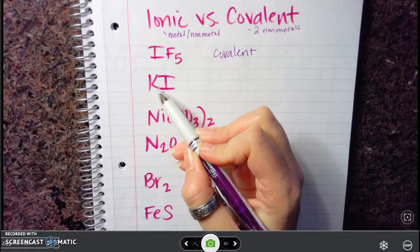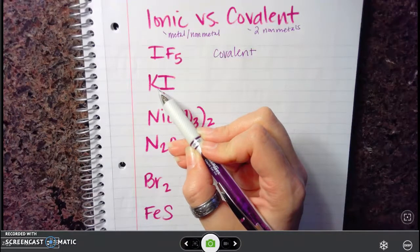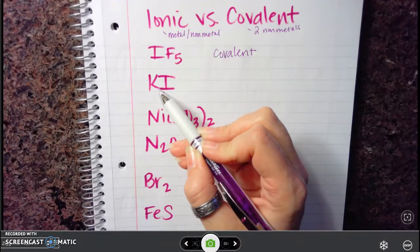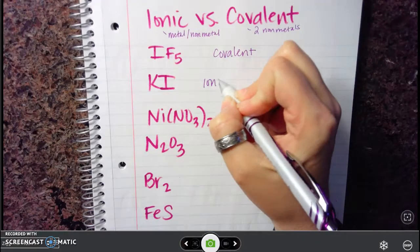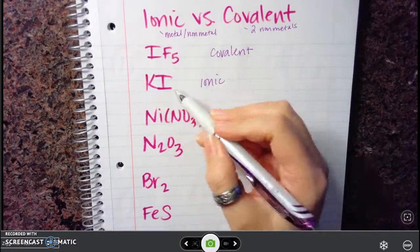When you look at the next one, we have potassium and iodine. Potassium here is a metal on the periodic table. So because we have a metal first, this one is actually ionic. Potassium has a positive charge, iodine has a negative charge. So metal, non-metal.